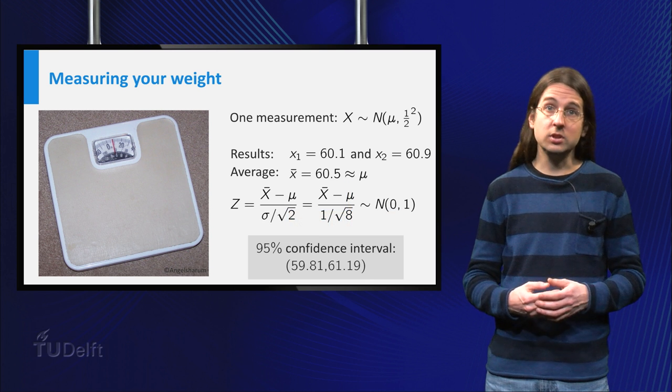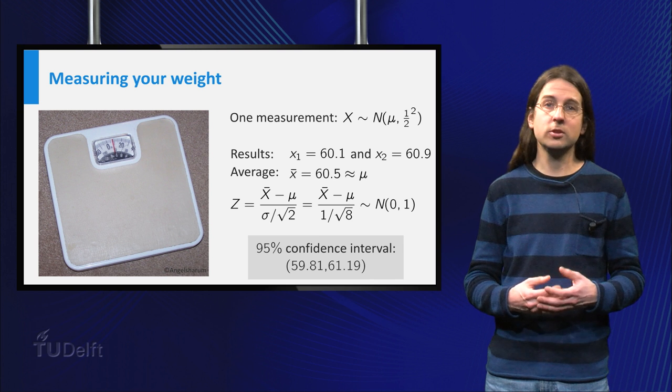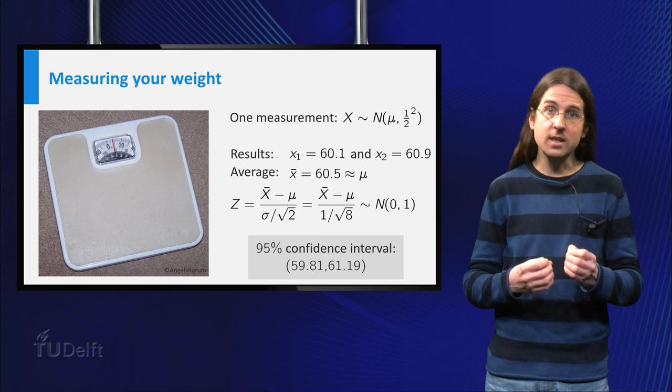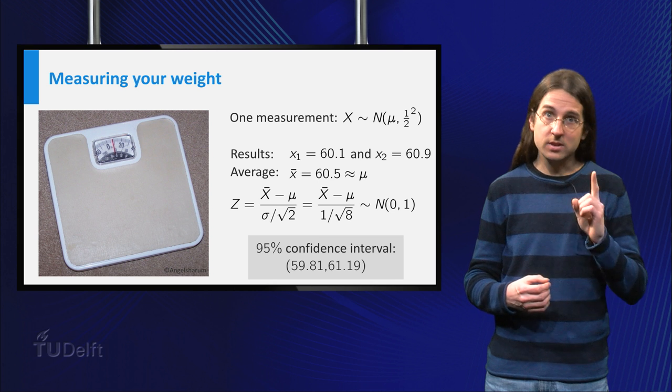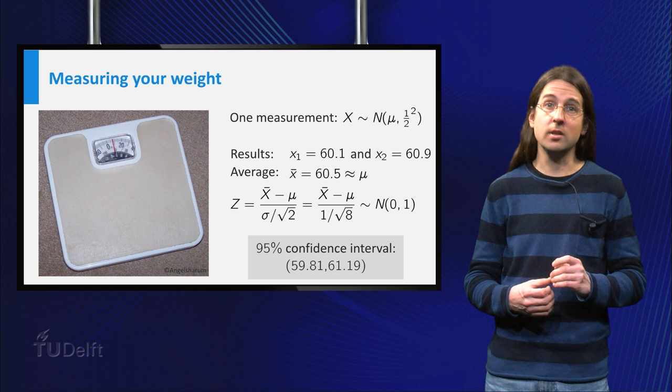We know that the average of two normally distributed random variables has a normal distribution itself, with the same mean mu, but the standard deviation of the average equals the standard deviation of the scale divided by square root of 2.